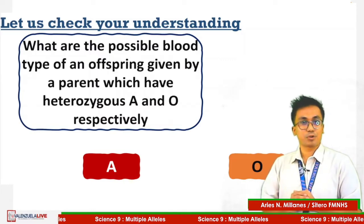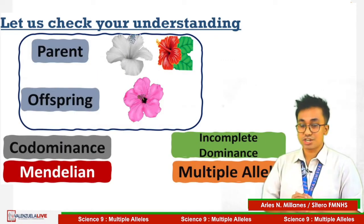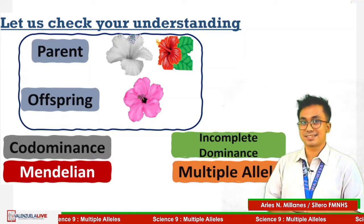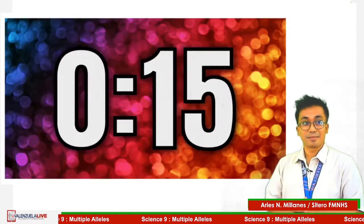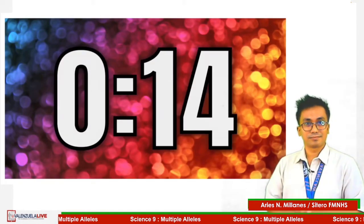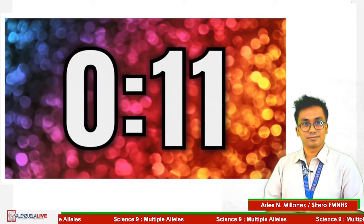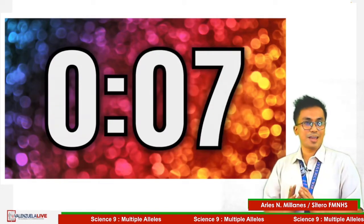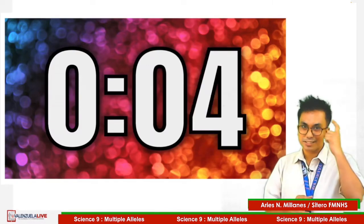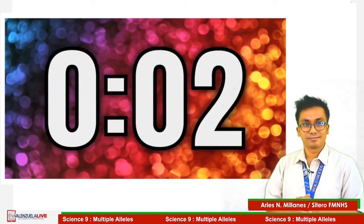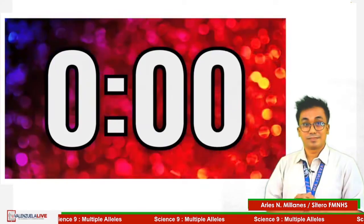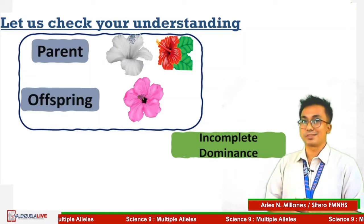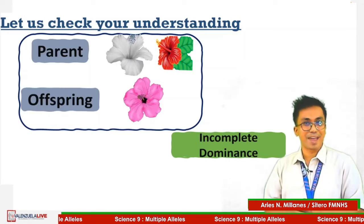For question 2: which of the following non-Mendelian inheritance best suits this image? 15 seconds — hurry! If you chose incomplete dominance, you have a very good memory.